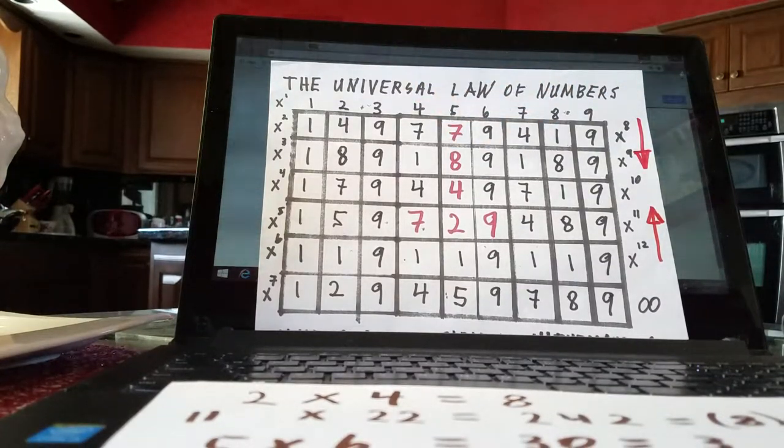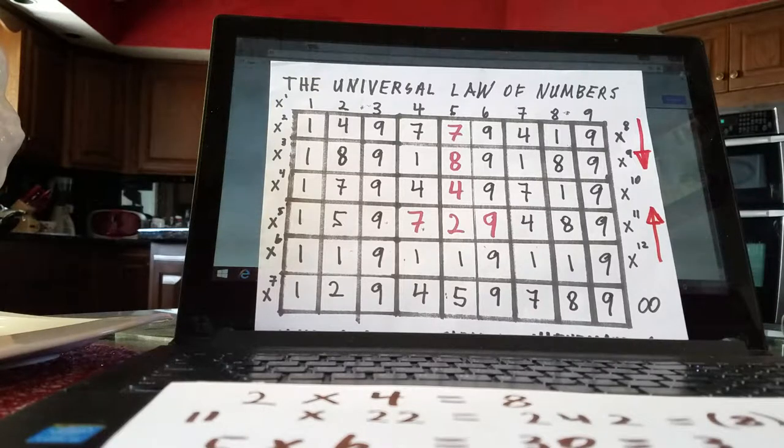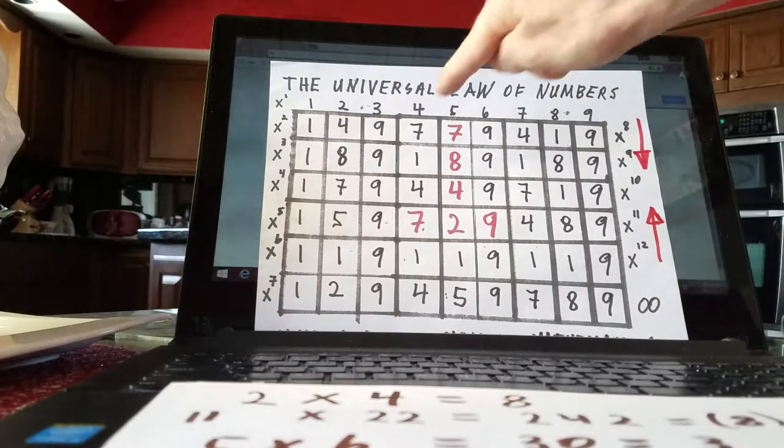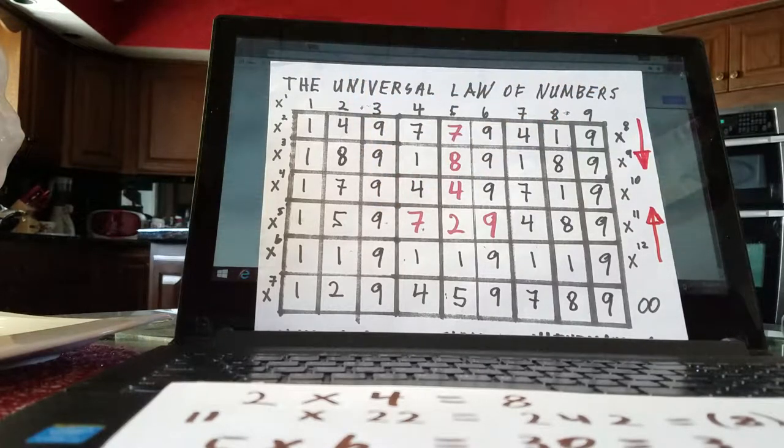If I say 2 times 6 is 12, well 2 times 6 is certainly 12, but it's also a 3 and it will behave like a 3. Any number that reduces to a 3 will behave like a 3. Any number that reduces to any one of these numbers will always behave just like that number. That's why 3 times 3 is 9, times 3 is 27, times 3 is 81, times 3 is 243, etc. It's the law of the universe.